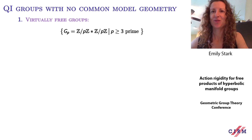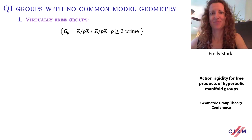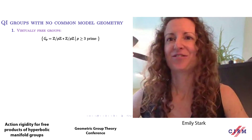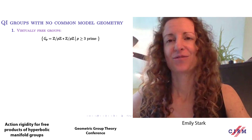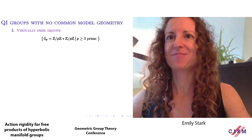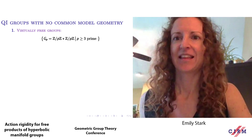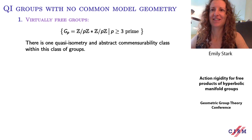The first previously known examples of quasi-isometric groups that have no common model geometry are given by Mosher-Sageev-Whyte. They consider the following family of virtually free groups: let G_p denote the free product of the finite cyclic group Z/pZ with itself, where p is an odd prime at least three. These groups contain free groups as finite index subgroups, so there is one quasi-isometry class and one abstract commensurability class within this family.